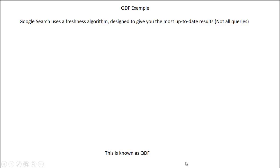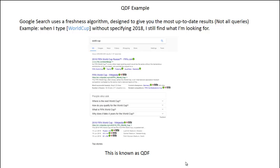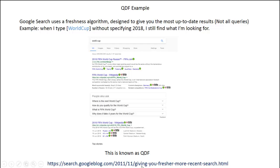Here's a quick example of QDF. Google search uses a freshness algorithm designed to give you the most up-to-date results, but not for all queries. For example, when I type 'World Cup' without specifying the year 2018, I still find what I'm looking for — this is Query Deserves Freshness in action. You can read more about this at the URL shown here, and towards the end of this presentation I'll provide a bunch of URLs for further reading.